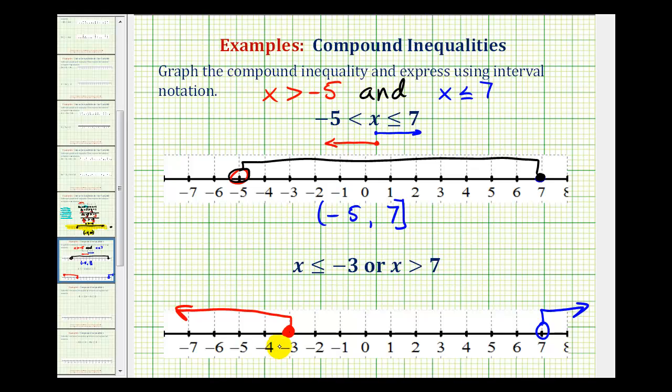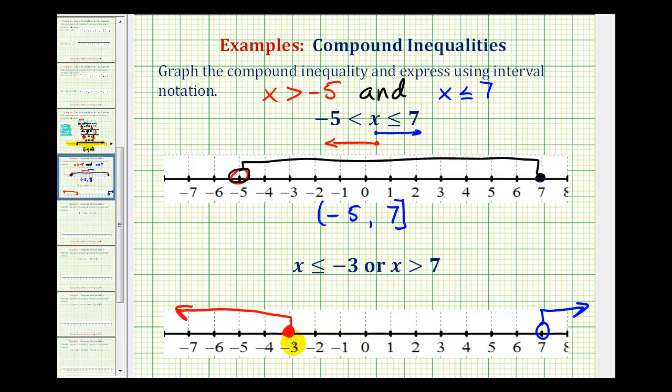Again, because this is an OR, either of these intervals would satisfy the compound inequality. So this is the graph of our solution, but now let's express it using interval notation. As we move left on the number line, we're approaching negative infinity. And as we move right on the number line, we'd be approaching positive infinity. And this is helpful to write the interval using interval notation. The interval on the left, we would have negative infinity and then negative three, with a rounded parenthesis for negative infinity, but a square bracket for negative three, because it includes negative three.